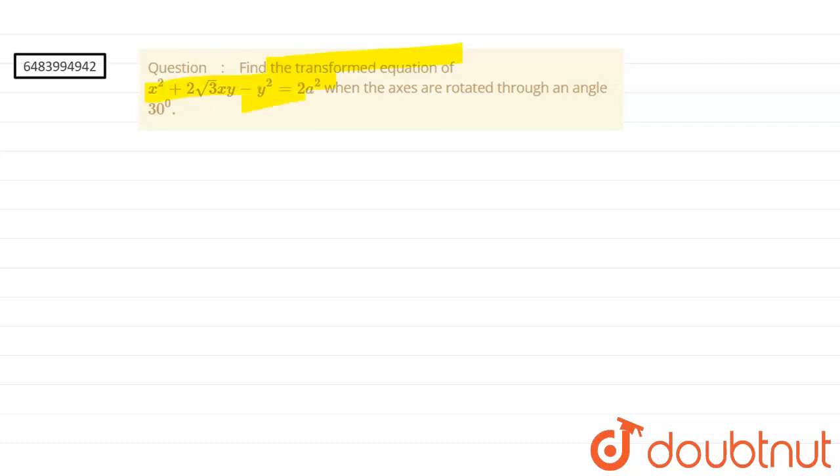find the transformed equation when axes are rotated through an angle of 30 degrees. So if capital X comma capital Y, I am calling them as my transformed coordinates,